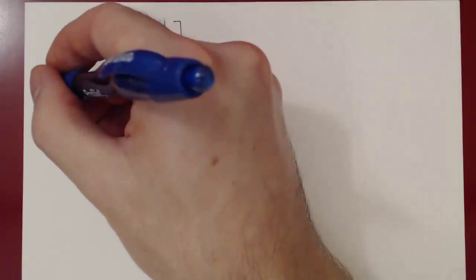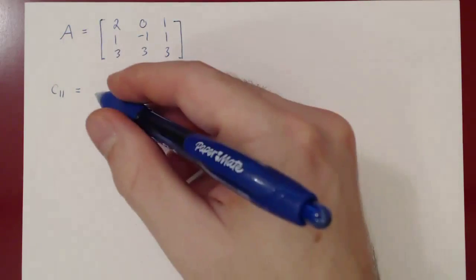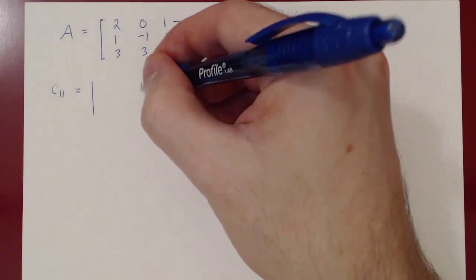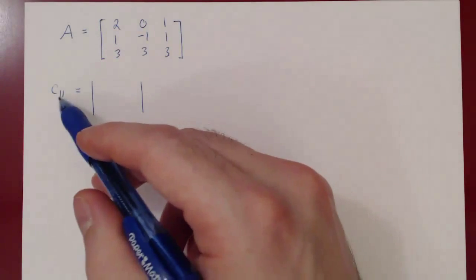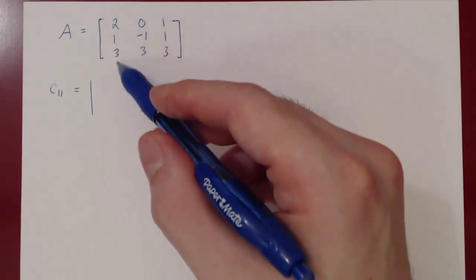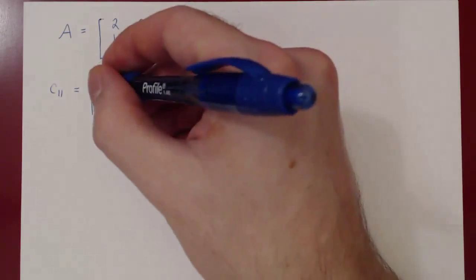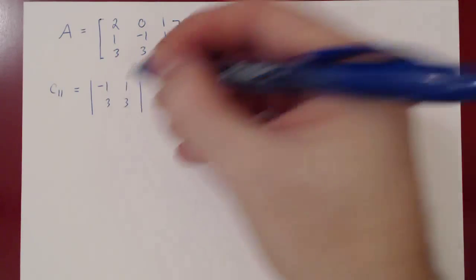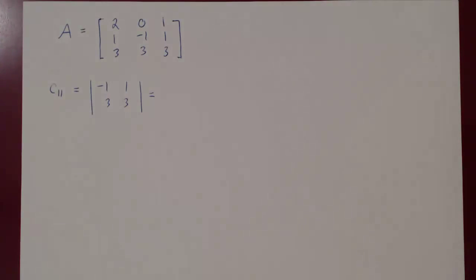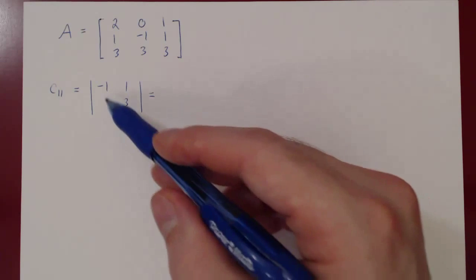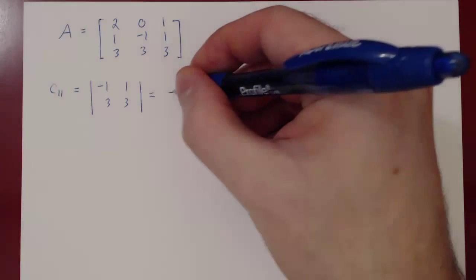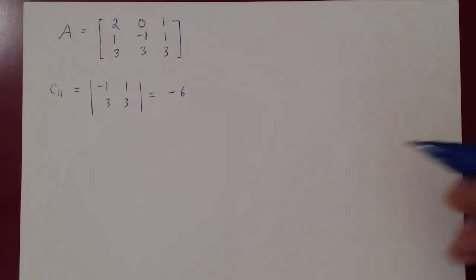Let's start with C11. We get no negative because 1 plus 1 is 2, which is even, times the determinant of the matrix obtained from A after we delete the first row, first column. That gives the matrix with entries negative 1, 1, 3, 3. This is the determinant of a 2 by 2 matrix, so we use ad minus bc: negative 1 times 3 minus 3 times 1, that's negative 6.